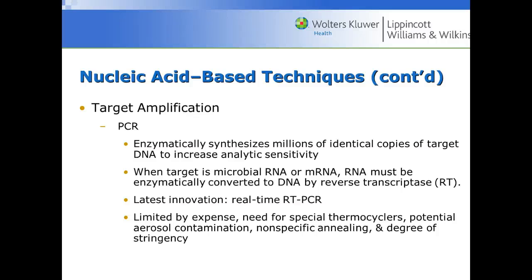One issue with PCR is that it's very expensive — we need thermocyclers — and there can be aerosol contamination issues. The latest innovation is real-time PCR. Going back to the MRSA patient example: we take the patient's nasal swab and run it through a thermocycler, constantly making copies of target DNA. Once there's enough for the analyzer to detect, it calls it positive — it could be positive in 15 minutes or 2 hours; it just keeps cycling until it comes up positive. This is wonderful for influenza testing — it's very specific and you can tell the physician with utmost certainty within 15 minutes to half an hour that their influenza test is positive.